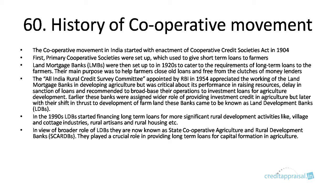Then in the 1920s, land mortgage banks were set up and they used to give long-term loans to farmers. So primary cooperative societies gave short-term loans whereas land mortgage banks gave long-term loans to farmers. Most of these loans from land mortgage banks were used to close earlier loans taken from private money lenders, who formed the major part of lending to farmers.